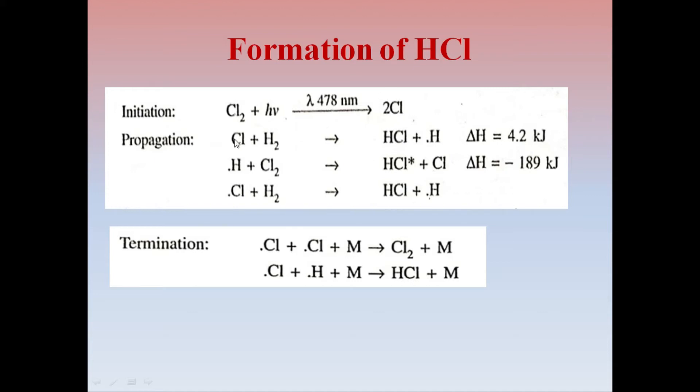These chlorine free radicals react with hydrogen molecule to form HCl and hydrogen free radicals. Hydrogen free radicals react with another chlorine molecule to form HCl excited state with chlorine free radical. This is how the process of reaction is propagated.